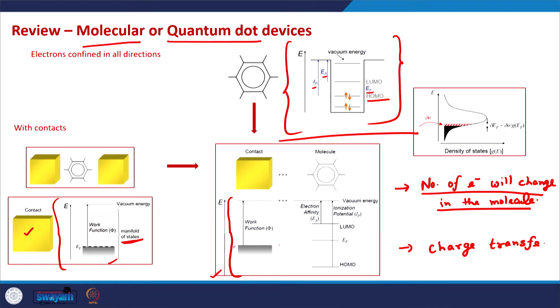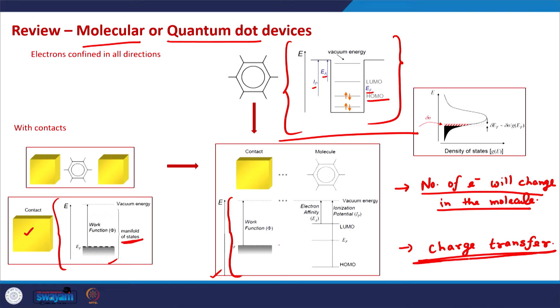When there is an electron movement across the system — from the contact to the molecule or from the quantum dot to the contact — two things happen especially in the quantum dot. One is that charge transfer occurs because electrons are charged particles. Second, the number of electrons changes in the molecule, which means the way the states are filled is also changed.